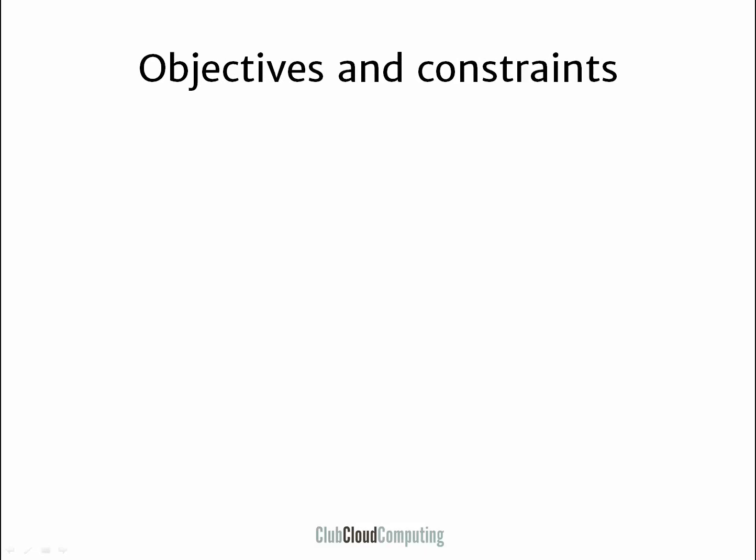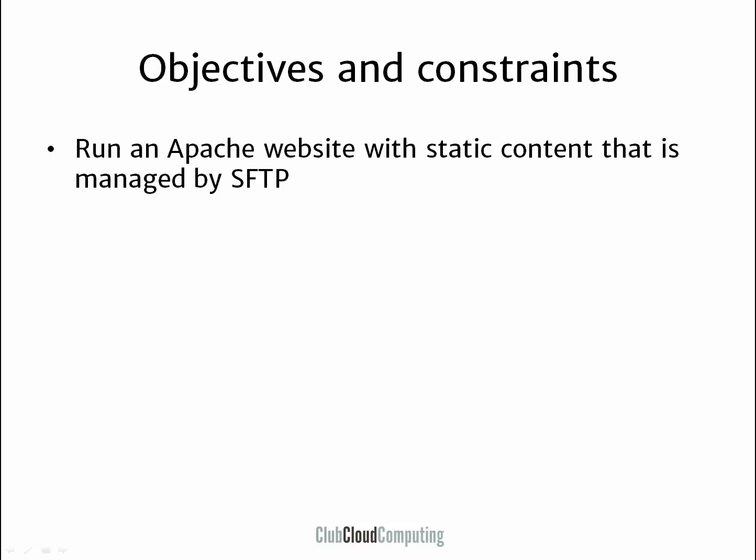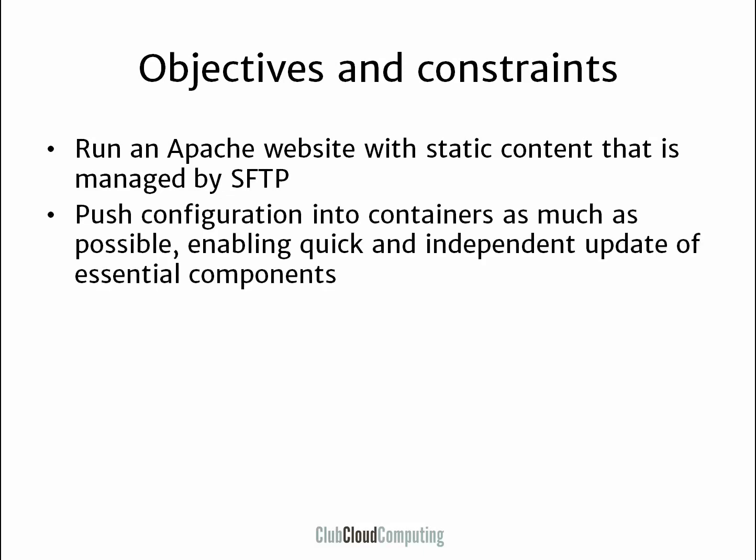So what's the objective of this project? First of all, to run an Apache website with static content that is managed by FTP. The main important thing is to take advantage of the new container technology. We want to push configuration of this website into individual containers as much as possible to enable quick and independent update of all these essential components. We have five components: backup, restore, logging, update, and website.